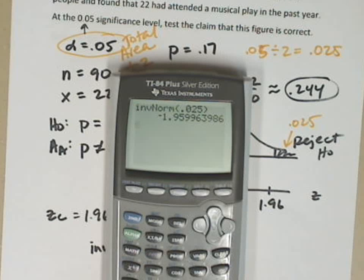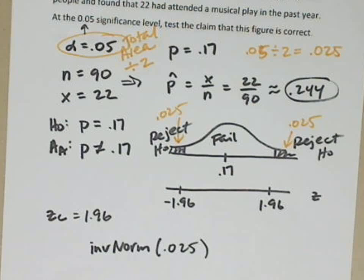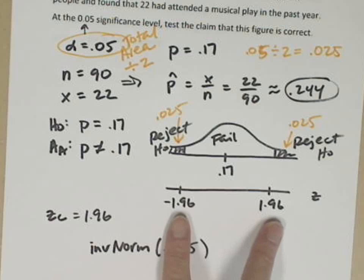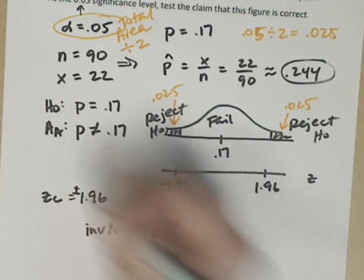The inverse norm takes an area from the left. So in my calculator, I'm going to ask it for the inverse norm of .025. I'm going to go into the distribution menu, second distribution menu, down to inverse norm. Area from the left is the area of that left tail, which is .025. There's my z-score, negative 1.96.